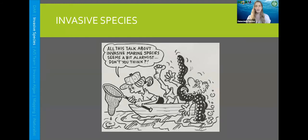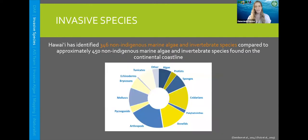We're here for HISAM — Hawaii Invasive Species Awareness Month. One might think this is alarmist, but in fact we're not being alarmist at all. A 2014 Davidson study found that there were 346 non-indigenous marine algae and invertebrate species found in Hawaii alone. That means we have almost the same number as the entire continental U.S., which is super high given the difference in coastline area — a huge number to manage for just one state.